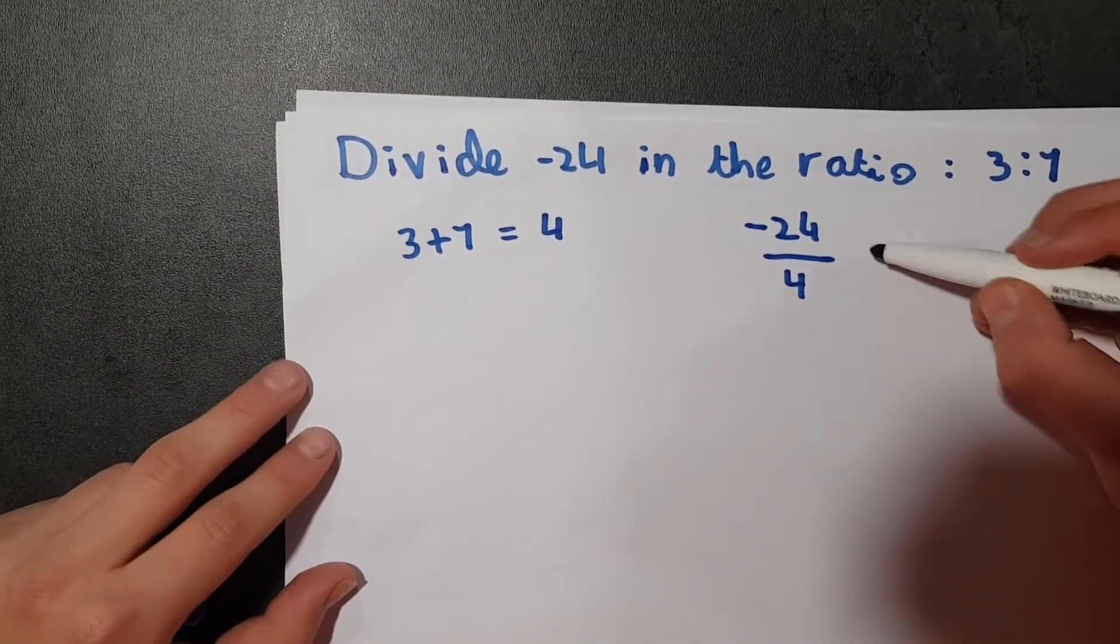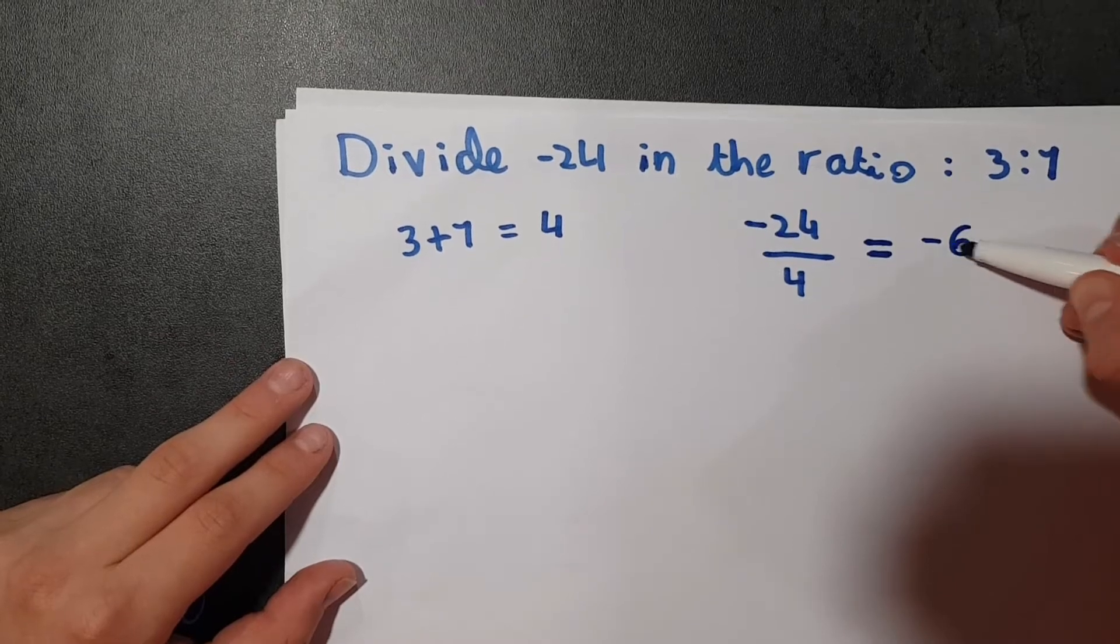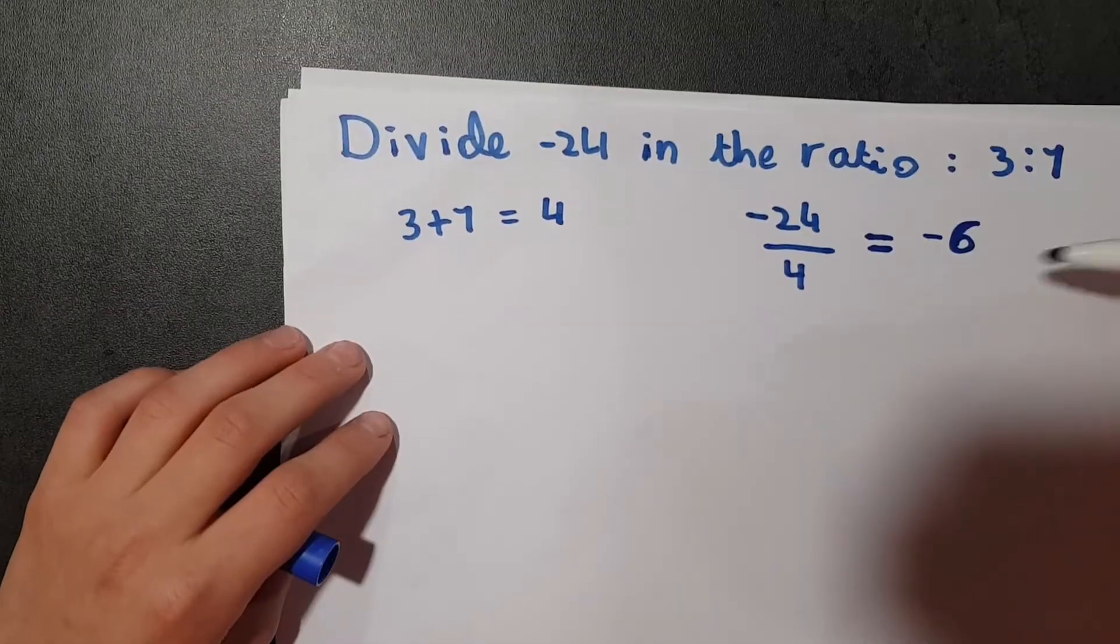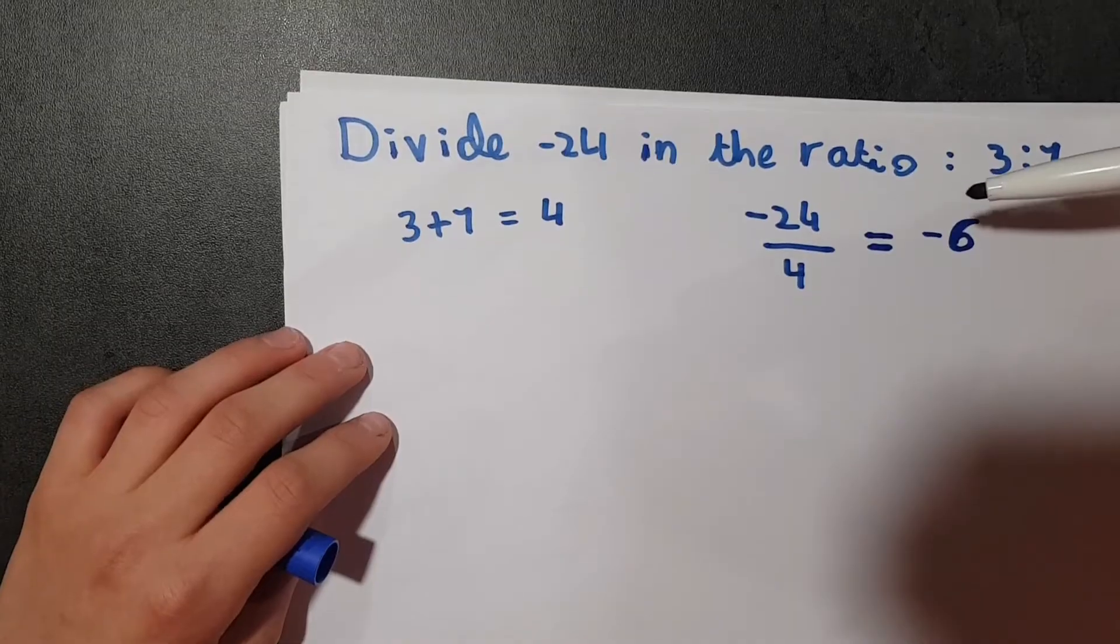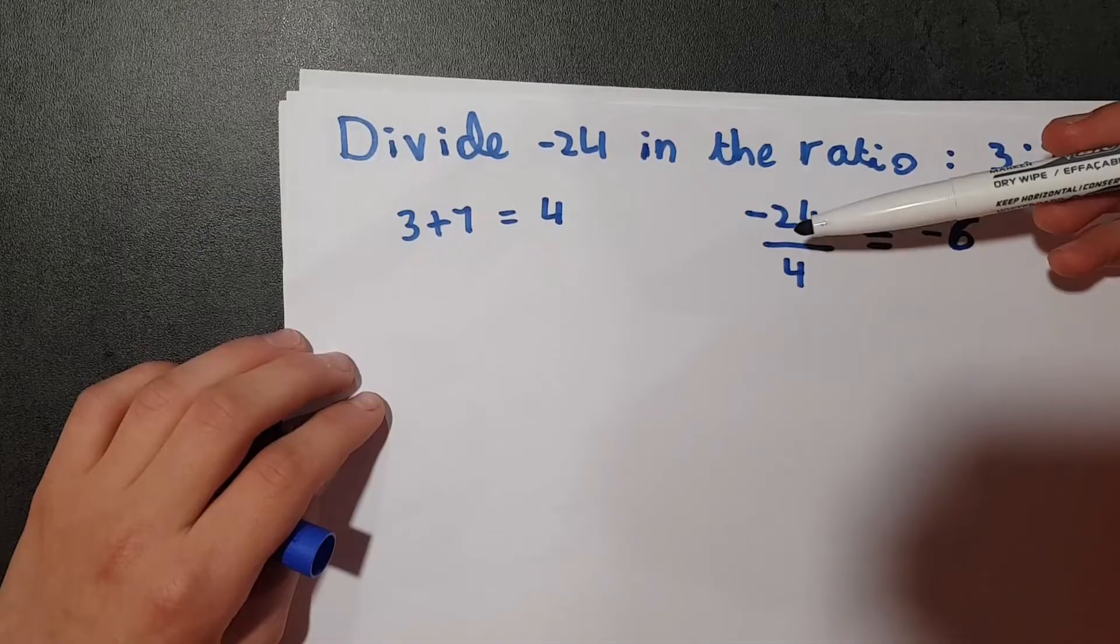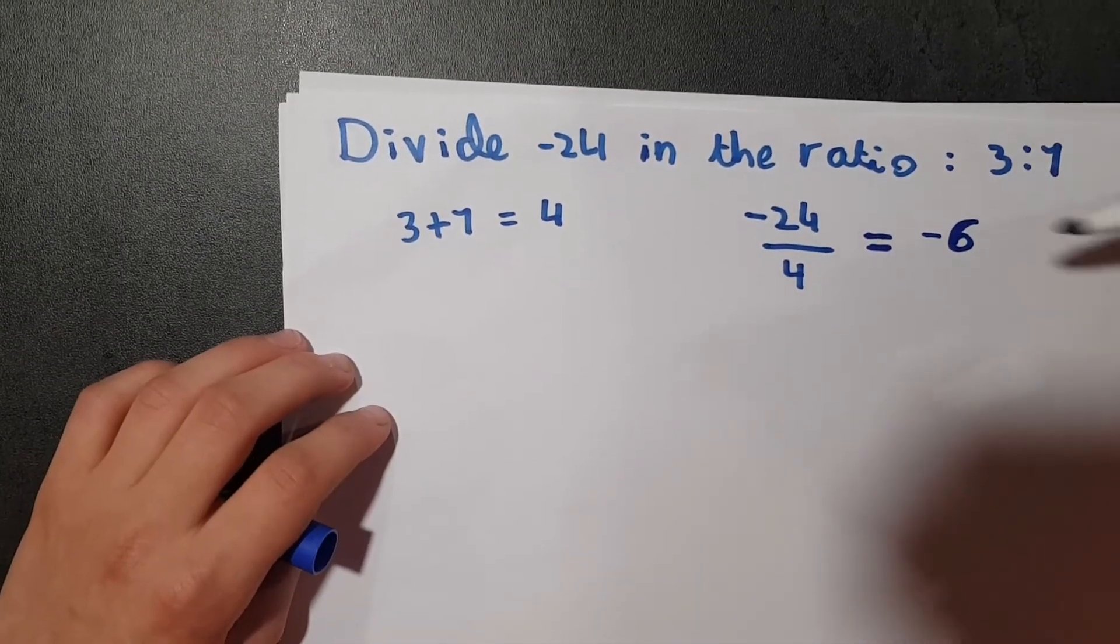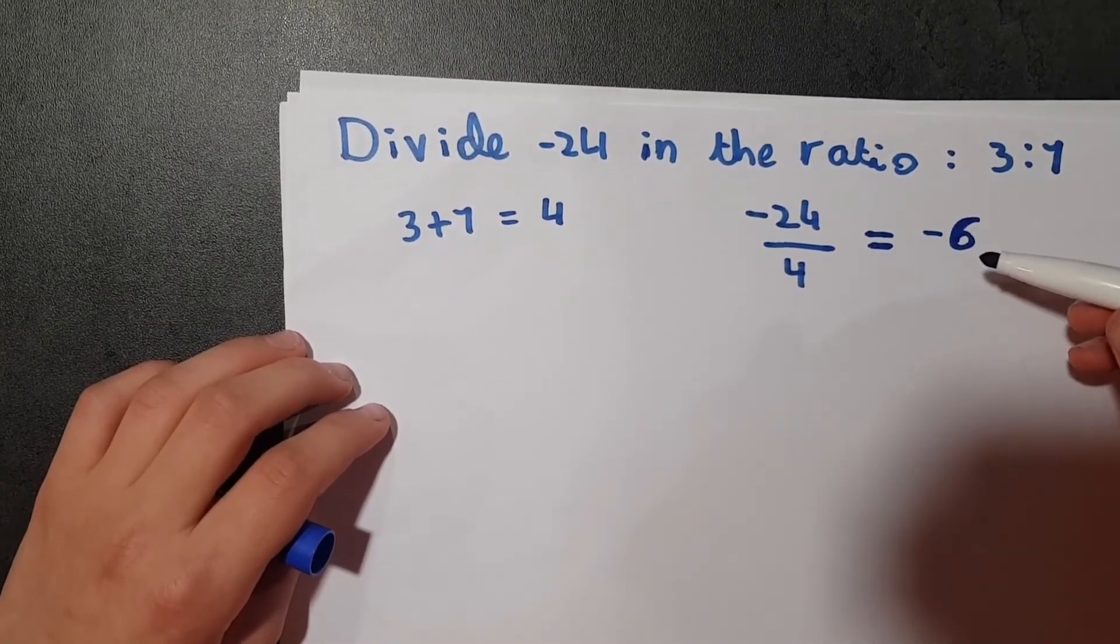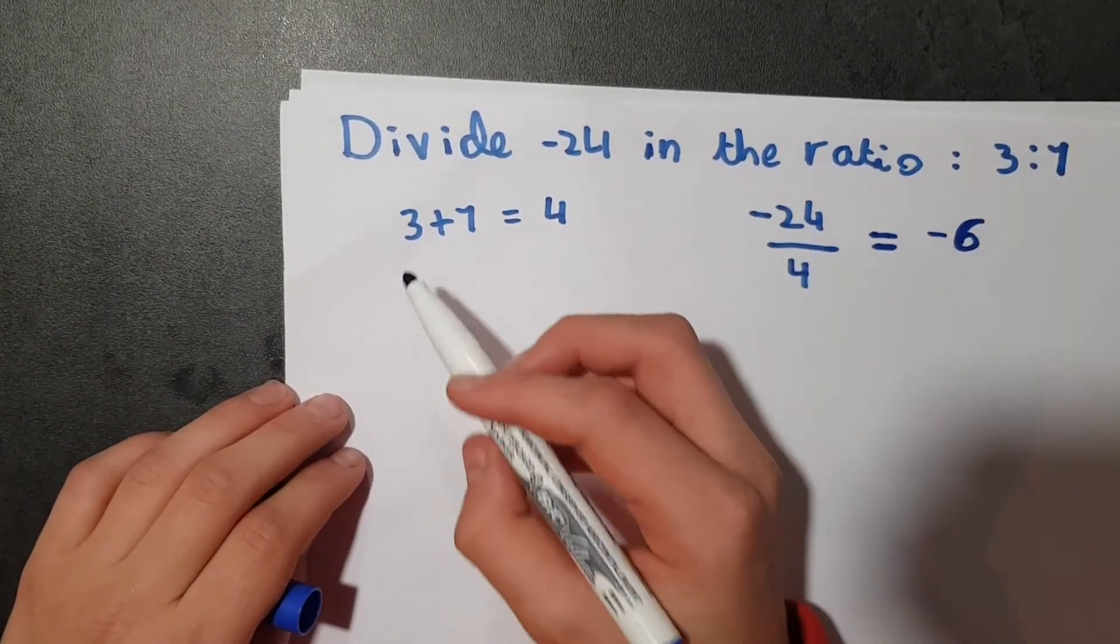It's minus 6 because, you know, negative divided by positive is obviously a negative. And if we would have wanted it to be a positive, it would have to be a negative divided by a negative, that would have made a positive result, or just both two positives. So now we do minus 6 times 3,